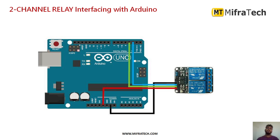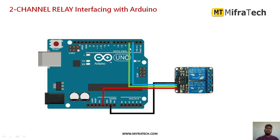Next we will see how to interface this two channel relay with Arduino. It has mainly four pins: GND, VCC for power supply, and two input pins — since it has two channels. Connect VCC to the 5V supply of the Arduino Uno and GND to the Arduino ground. Input one and input two are connected to digital pins 2 and 3 of the Arduino Uno. This is a simple way to connect the two channel relay with the Arduino Uno microcontroller.